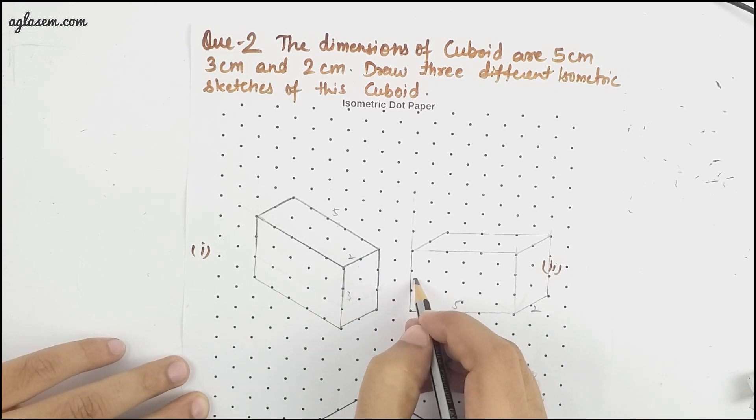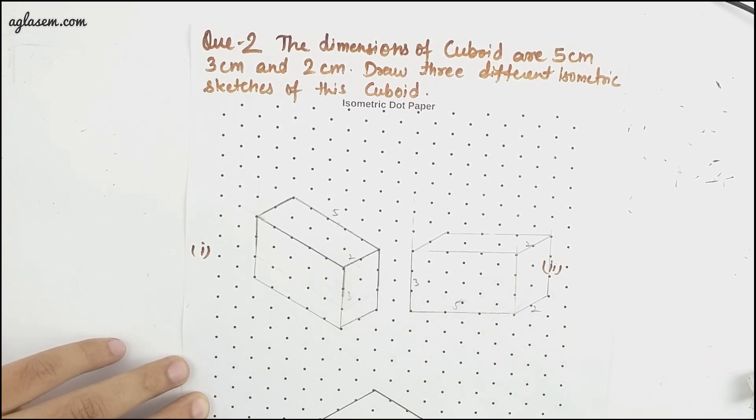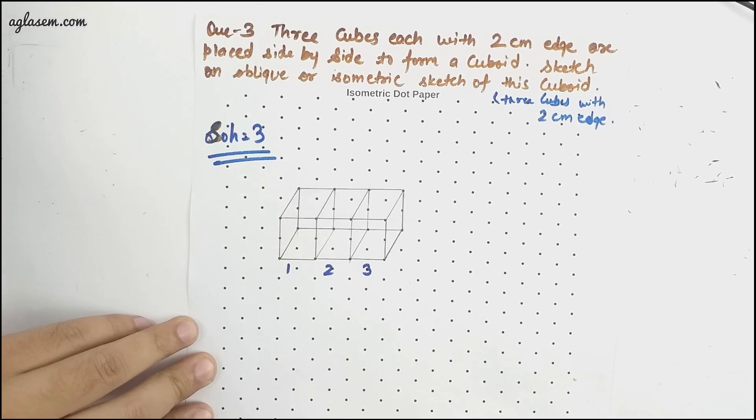Second one is five here, three here and two here. Second one is this. Third one is five here, three here and two here. So these are the three sketches of a cuboid with sides 5, 3 and 2.